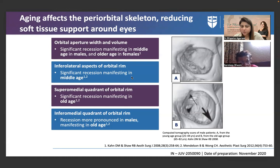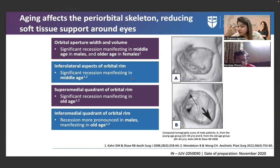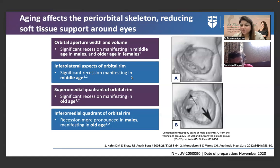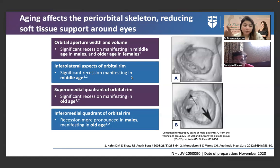The infralateral aspect of the orbital rim shows significant recession manifesting in middle age. The supramedial quadrant of the orbital rim shows significant recession manifesting in old age — though individuals with low calcium and vitamin D deficiencies may show this earlier. These patients often present concerned about medial brow descent, which is an indication of underlying supramedial bone recession.